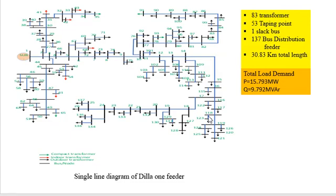The single line diagram of Dilla feeder consists of 137 buses. The total distance coverage is 30.83 kilometers. The total active power load demand is 50.793 megawatts, and the reactive power demand is 9.792 megavars.